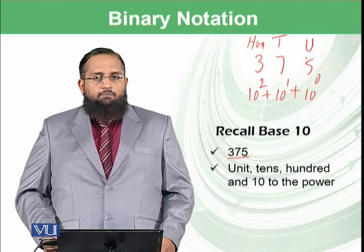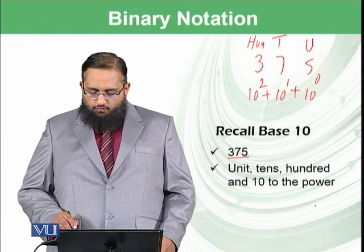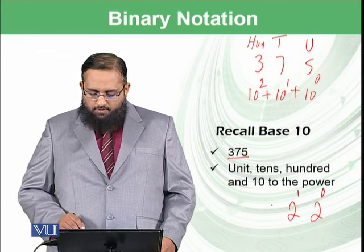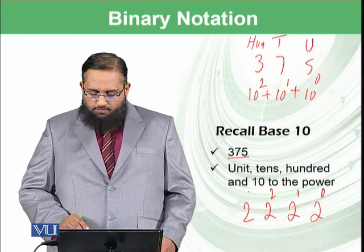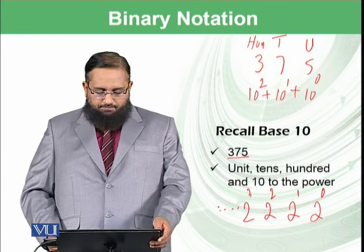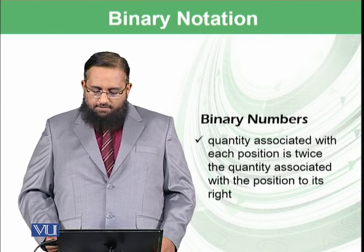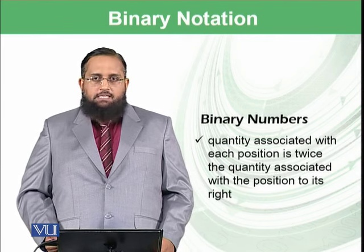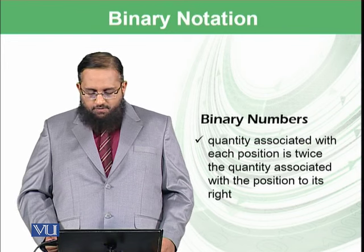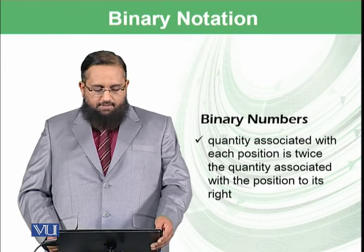Similarly, in binary numbers, we have the base of 2 which forms 2 raised to power 0, 2 raised to power 1, 2 raised to power 2, 2 raised to power 3 and so on. In binary numbers, the quantity associated with each position is twice the quantity associated with the position to its right, as we have seen in the previous slide.